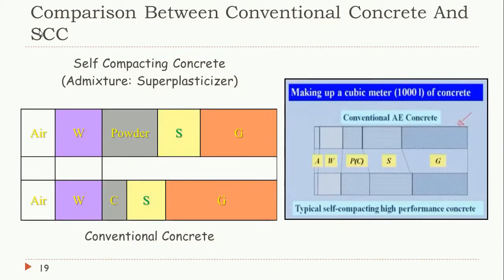This diagram compares conventional concrete and SCC proportions. The water content is similar in both, but the powder content — cement plus mineral admixtures — is much greater in SCC. Conventional concrete has a large volume of gravel, whereas SCC uses a significantly smaller volume of coarse aggregate. This mix proportion example does not include chemical admixtures.